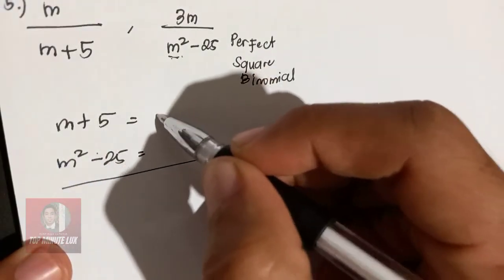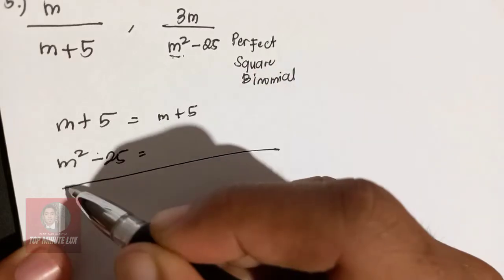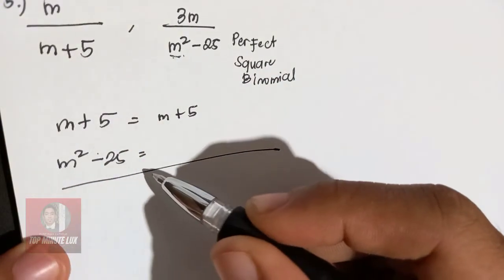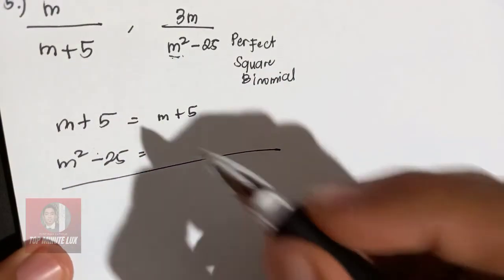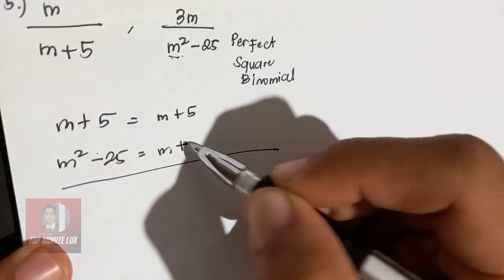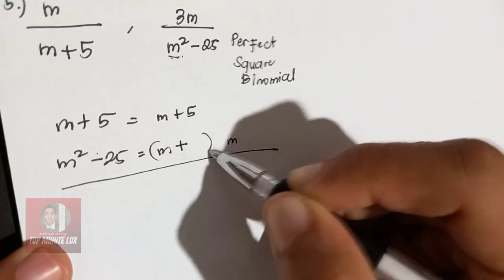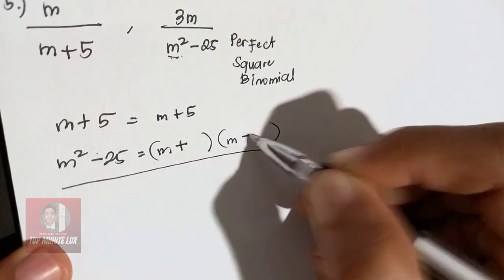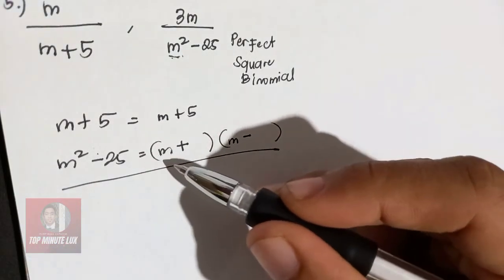So for M plus 5, copy M plus 5. For your M squared minus 25, break it down into 2. So you have your 1M, then it is positive, 1 will be positive, and the other M will be with negative. So you have 2M, M, M.